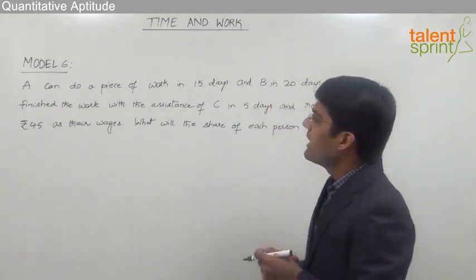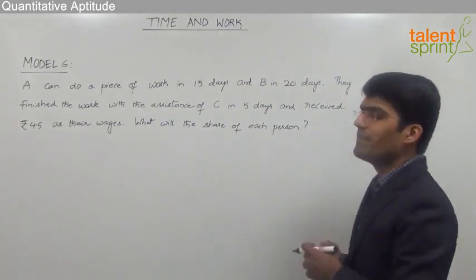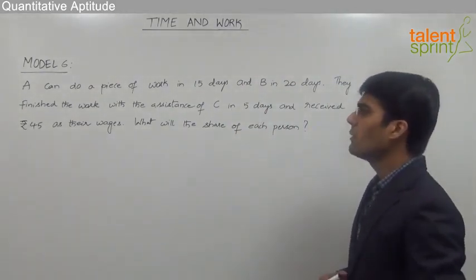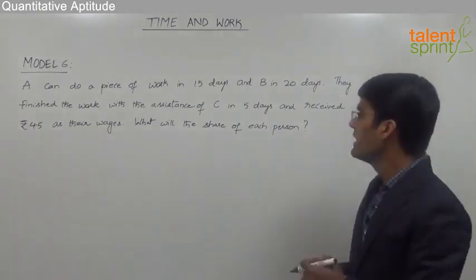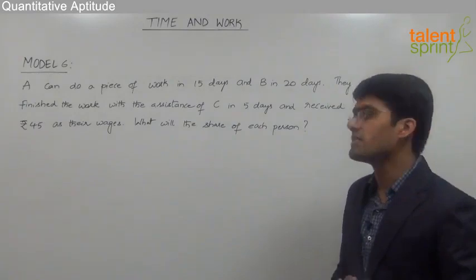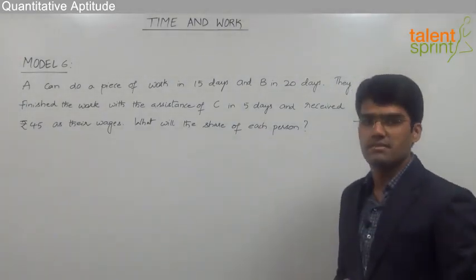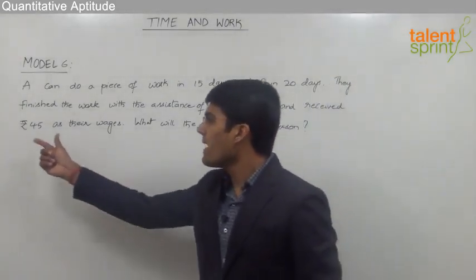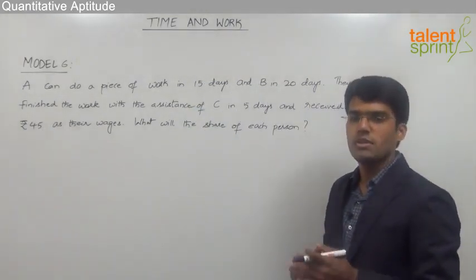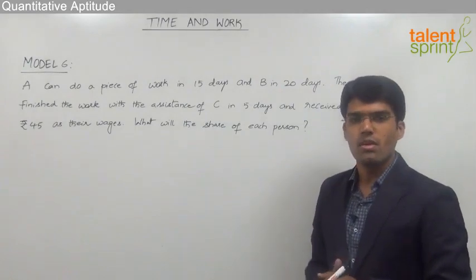Let us look at the question here. A can do a piece of work in 15 days and B in 20 days. They finished the work with the assistance of C in 5 days and received Rs 45 as their wages. So what will be the share of each person? The total amount which the three persons got is Rs 45, and we need to find out the individual share of these persons.